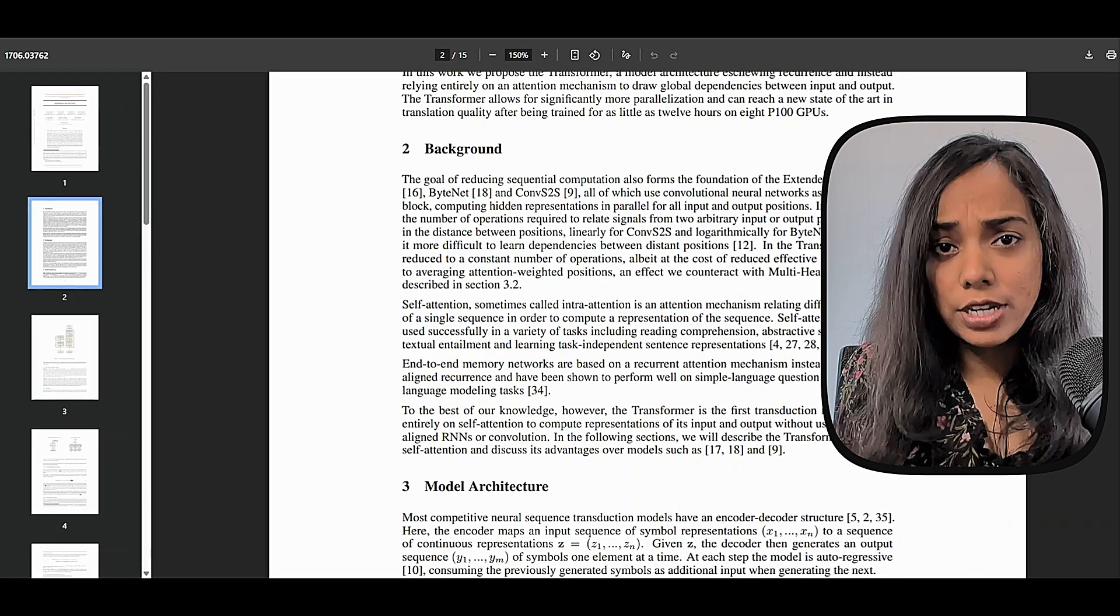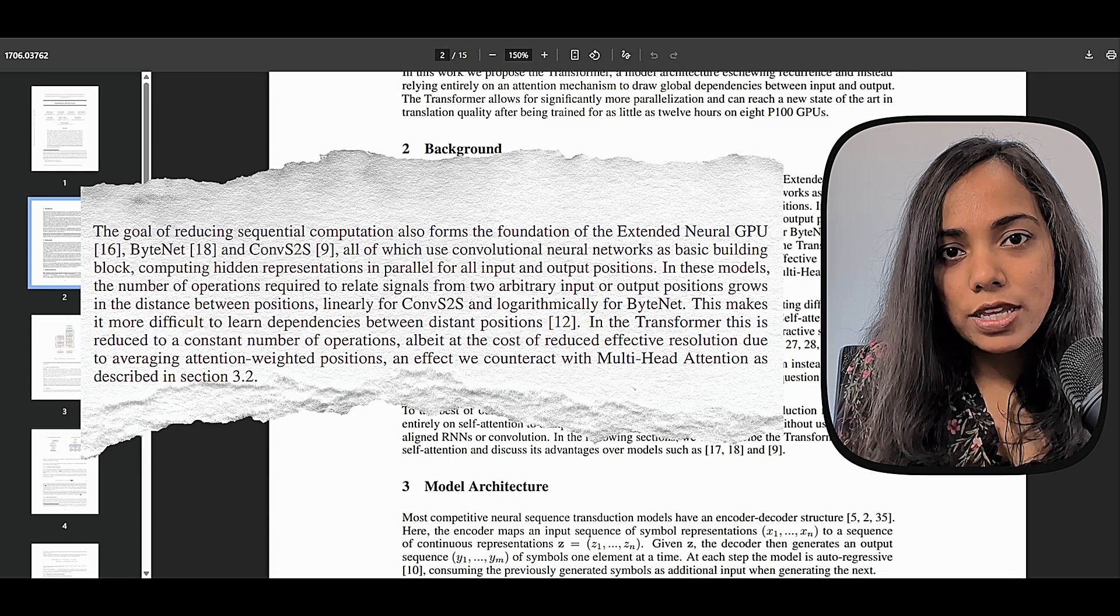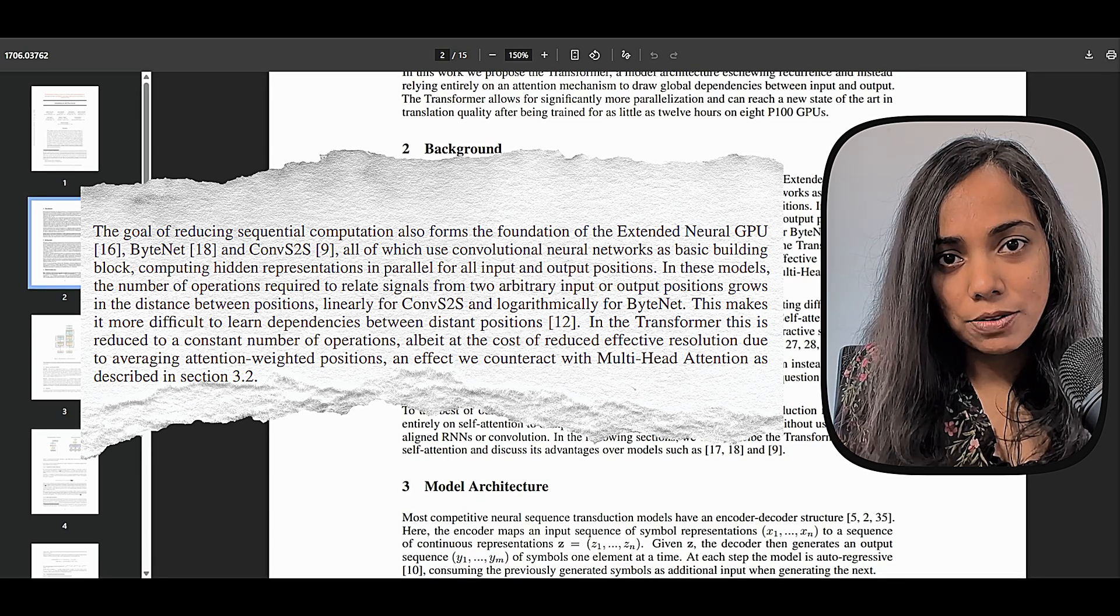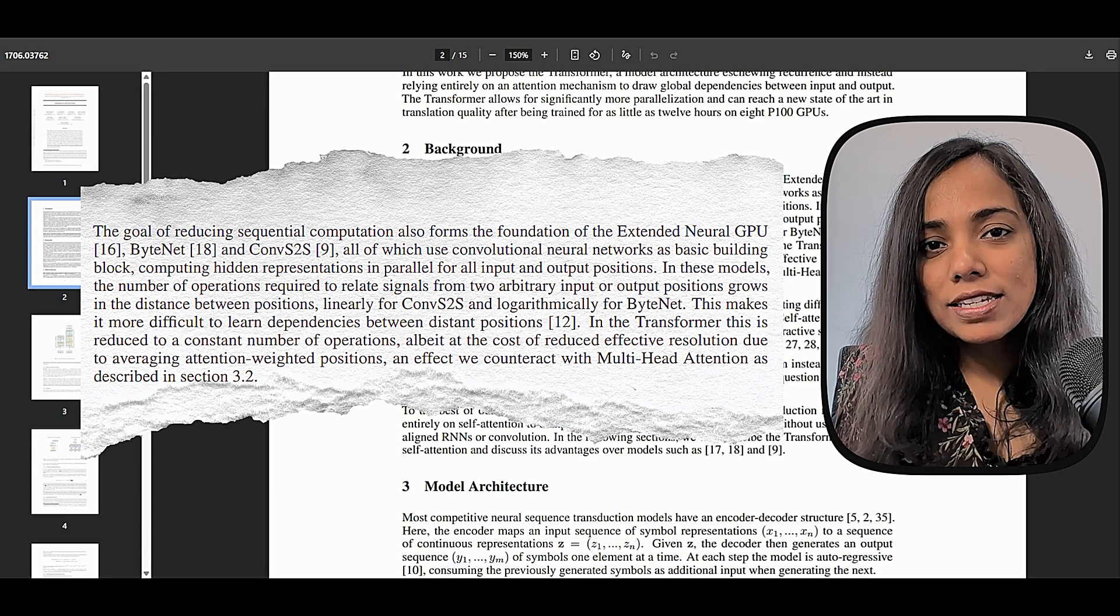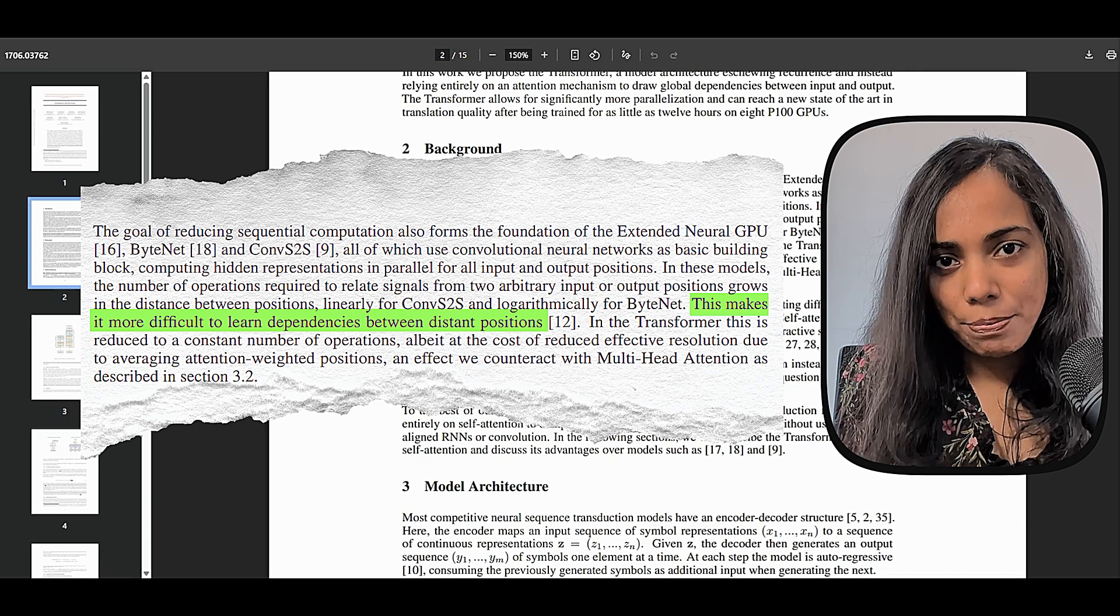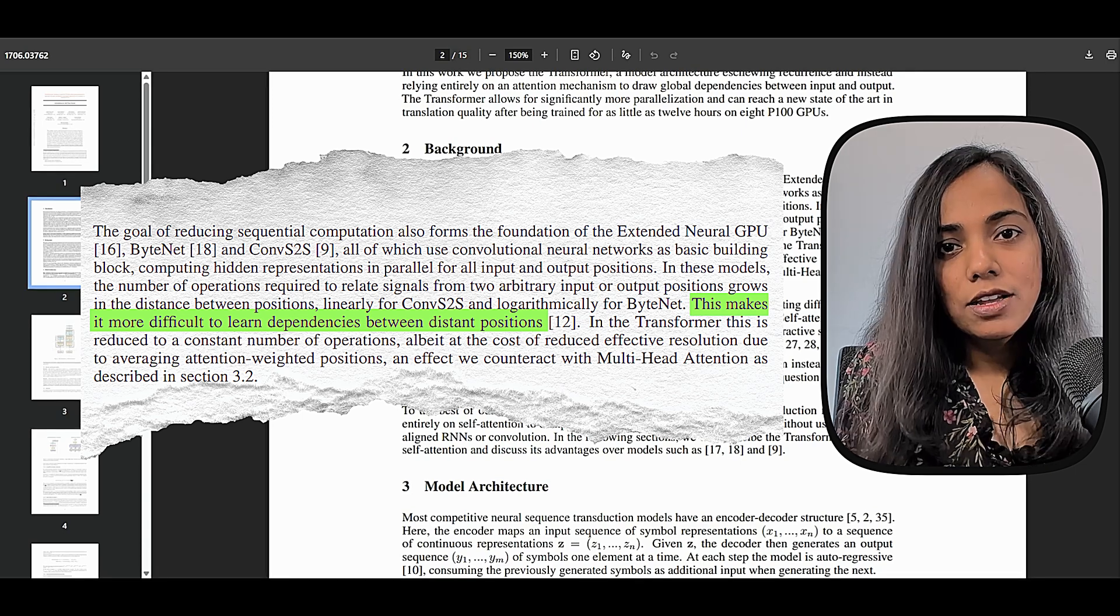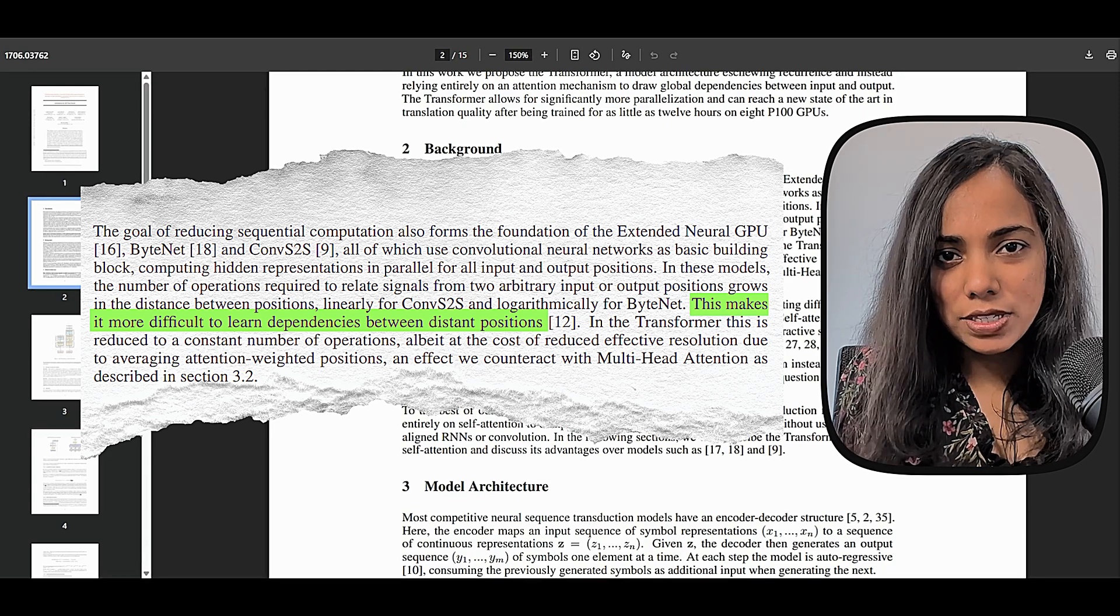CNNs, on the other hand, did not have the parallelization problem. There were networks like ByteNet or Converse2S which were based on CNN architecture. CNNs could read multiple words at once, but they still struggled with distant words. The words that are far apart. So they couldn't connect those easily. For distant words, the computation would be too complex in case of a CNN.